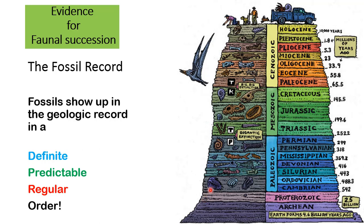What that means is fossils are the indicators of something that lived a long time ago. Those organisms only lived for specific amounts of time, so they're only found in certain places in the fossil record. Fossils only existed for short periods of time, and they're found in order in the fossil record — these lived first, they died; these lived next, they died; these lived next, they died. So you find them in order in the fossil record.